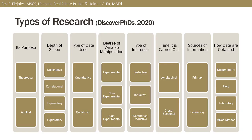Lastly, on the types of research according to how data are obtained: documentary — also referred to as secondary sources — uses existing sources of information. Field utilizes the location of the phenomenon in collecting information. Laboratory involves the use of a controlled environment, while mixed method involves a combination of the previously mentioned types of research. There are still other ways on how research is classified.